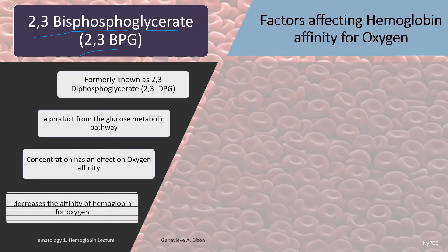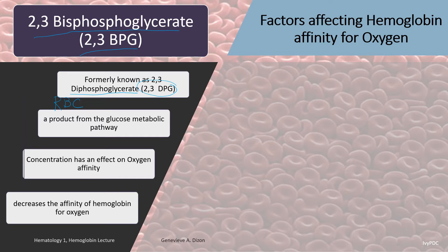This is formerly known as 2,3-DPG or 2,3-diphosphoglycerate. This is actually a chemical found inside red blood cells which is produced from the glucose metabolic pathway — I am referring to glycolysis. Even if red blood cells do not have a nucleus anymore, they are still able to perform this function for ATP. And 2,3-BPG is an intermediate of this glycolytic process.